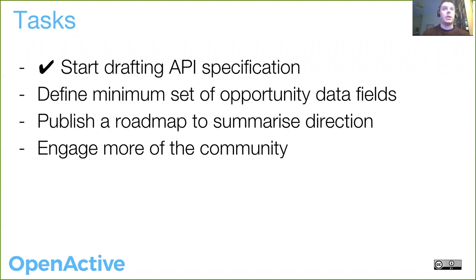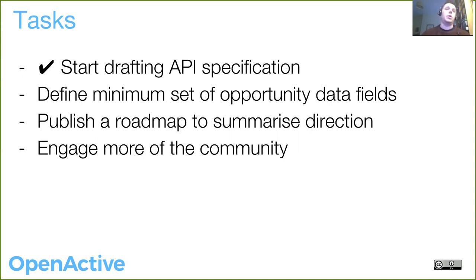We need to start drafting the API spec itself — that's the piece of work Nick has started on. We're doing that within a Google document that's been shared with a few people initially but we're going to circulate wider today. We'll use the Google document to make it easier to collaborate around the text and discuss particular features before turning it into a more formal doc. Things we haven't done yet: we haven't started looking at what's the minimum set of opportunity data fields needed for an event or facility to ensure they're bookable. And we need to do a bit of work to make sure everyone outside this group has a clear view on the roadmap and to engage more of the community — so there'll be some blog posts from the Open Active initiative.